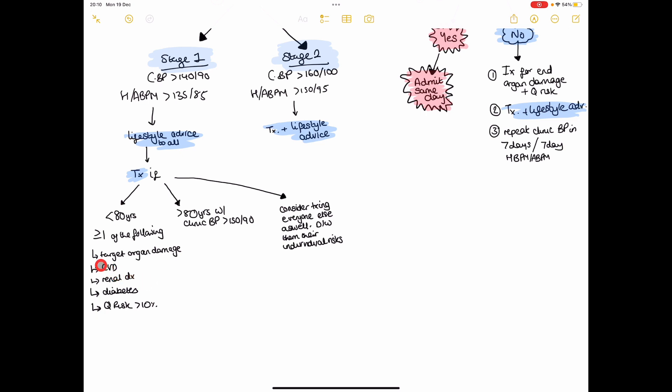So if they've got any target organ damage from the investigations you did earlier, if they've got history of already existing cardiovascular disease, any already existing renal disease, any diabetes, or if their Q-risk scores come back at more than 10%.